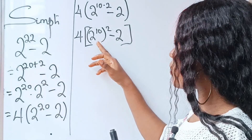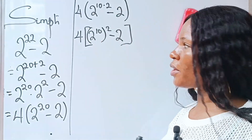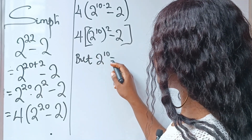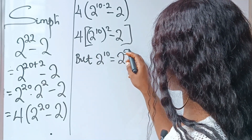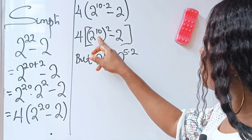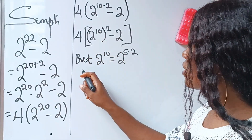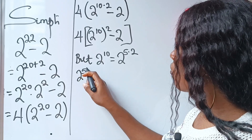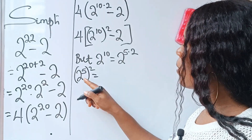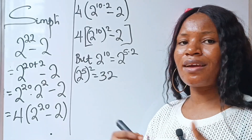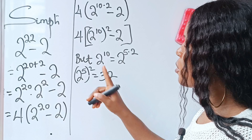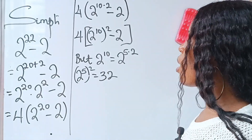Now I'm going to work on 2 to the power of 10. We have 2 to the power of 10 equal to 2 to the power of 5, multiplied by 2. Using the same rule, we can write this as 2 to the power of 5, squared. Now 2 to the power of 5 is 32 — that's something everyone is supposed to know, it's basic. So what we have here is 32 squared.